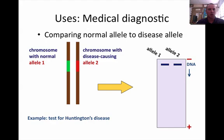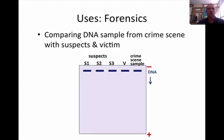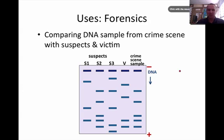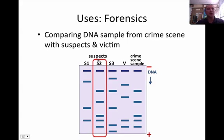How can we use this in medical uses? If we had a chromosome with a normal allele and a chromosome with a disease-causing allele, such as Huntington's, and put them side by side, they're different. If you had the DNA from a person and looked at it, you could tell if they had Huntington's if it looked like pattern number two, or normal if it looked like pattern number one. From crime scenes, let's say we have DNA from a crime scene, DNA from a victim to eliminate, and DNA from three suspects — we simply see which suspect matches the bands. Suspect number two is who did it — that's how it works with forensics.